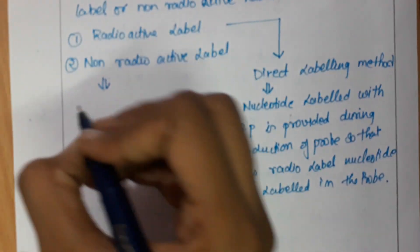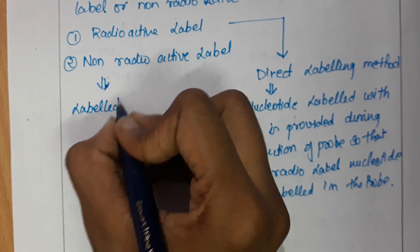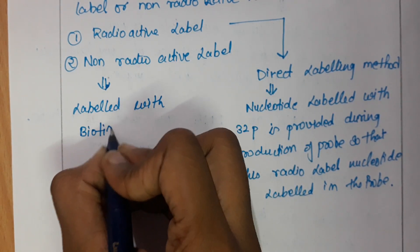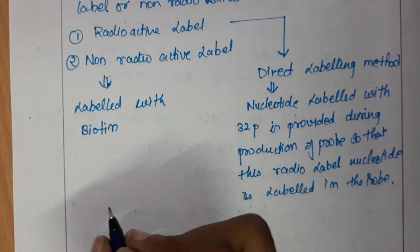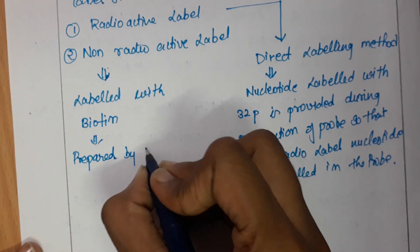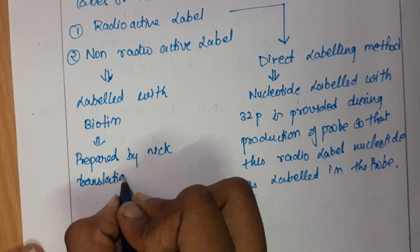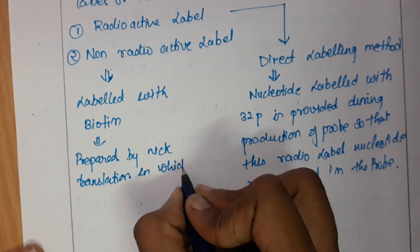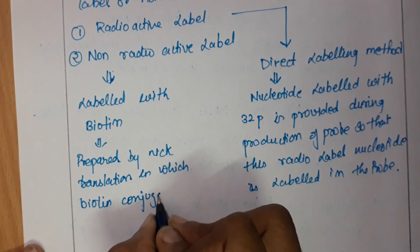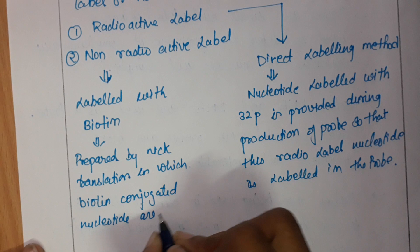In non-radioactive labeling, probes are labeled with biotin. These probes are prepared by nick translation in which biotin-conjugated nucleotides are used.